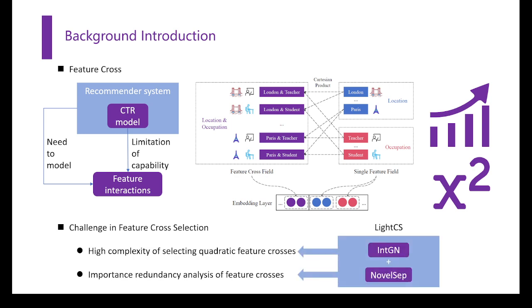We propose LightCS, a feature cross-selection algorithm with two sub-modules, to solve the two challenges respectively.